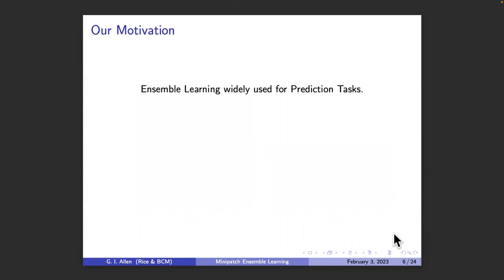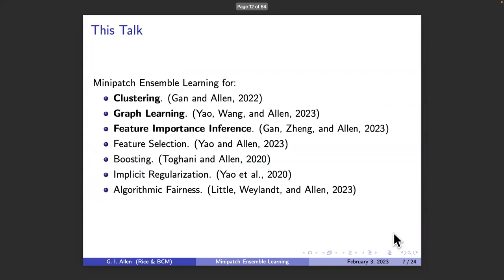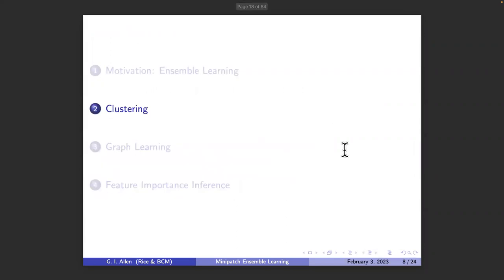Ensemble learning is widely used in supervised settings. But today I'm going to focus on using ensemble learning in all the cases where you didn't think ensemble learning could be used. Specifically, I want to leverage the great properties of ensemble learning and the specific advantages of double subsampling from mini patch learning to do discovery. Today I'll talk about this in the context of unsupervised learning, inference, and feature importance inference. I'll give a brief overview of clustering and graph learning and spend more time on the inference.